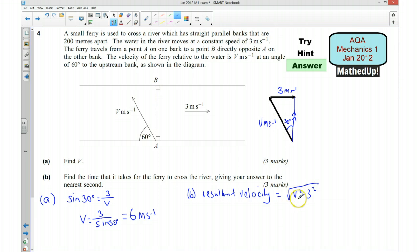We've worked out V to be 6, so that's going to be equal to 6 squared, which is 36, take away 3 squared, which is 9, and 36 take away 9 gives us 27. So we've got root 27, which is equal to 3 root 3, and that's going to be in metres per second. Okay, so that's our resultant velocity.